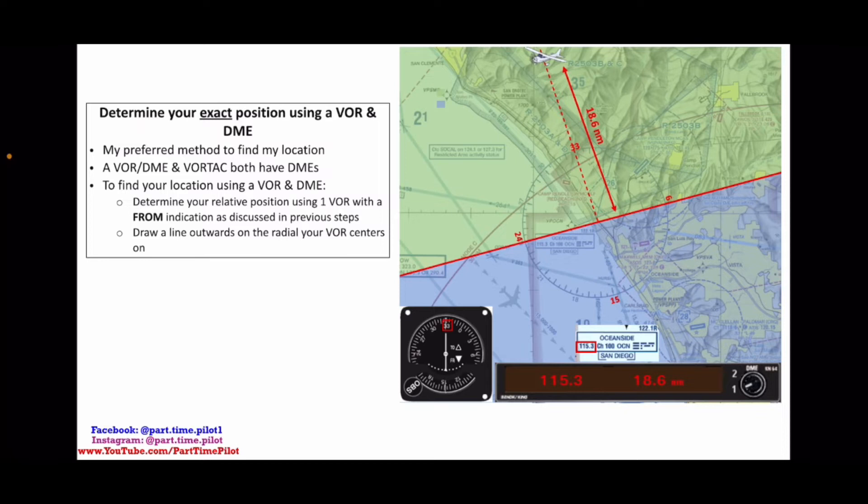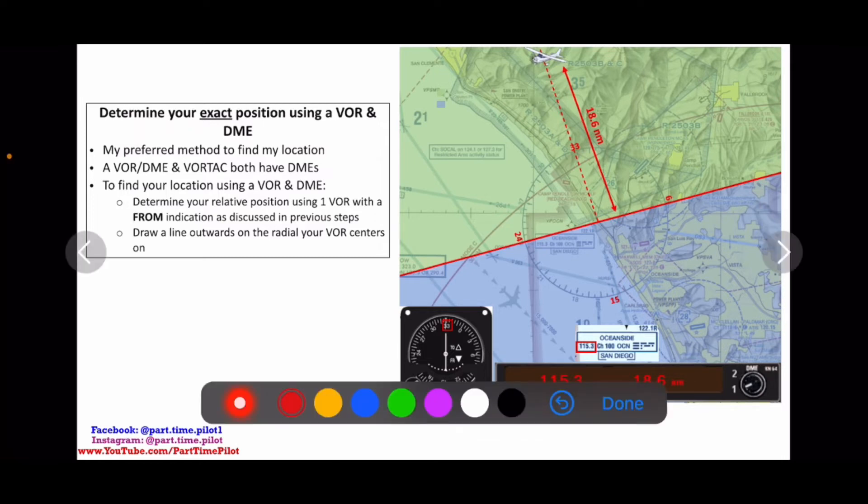All we have to do is turn the OBS until we get the needle centered with a FROM indication, and that tells us what radial we're on. Now we can look at our VOR on our map, our VOR compass rose on our map, and then draw out from the radial that we're centered on. We know that our aircraft is somewhere on this line, but we don't know how far along this line we are. That's where the DME comes into play.